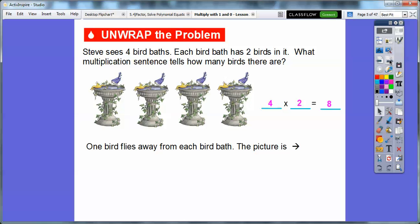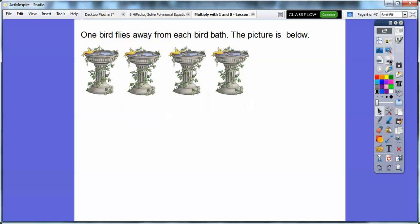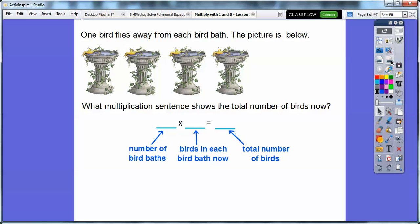So one bird flies away from each birdbath. Here's our picture. One bird flies away, so there's only one left, the yellow guy in each one. What multiplication sentence shows the total number of birds now? There's four groups of one. This would be four times one. The number of birdbaths is four. The number of birds in each bath is one. So how many birds do we see? One, two, three, four. Four times one equals four.